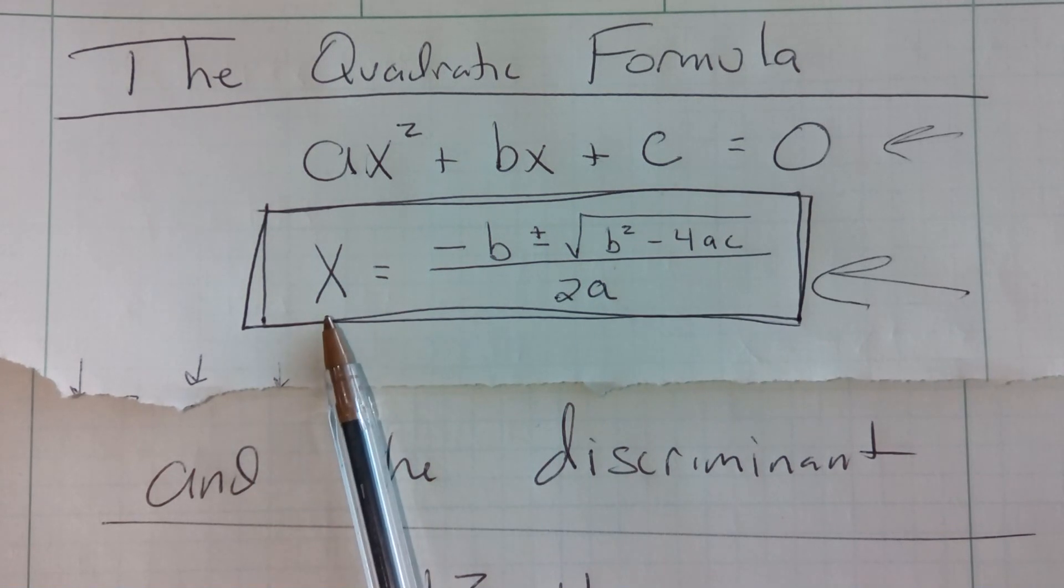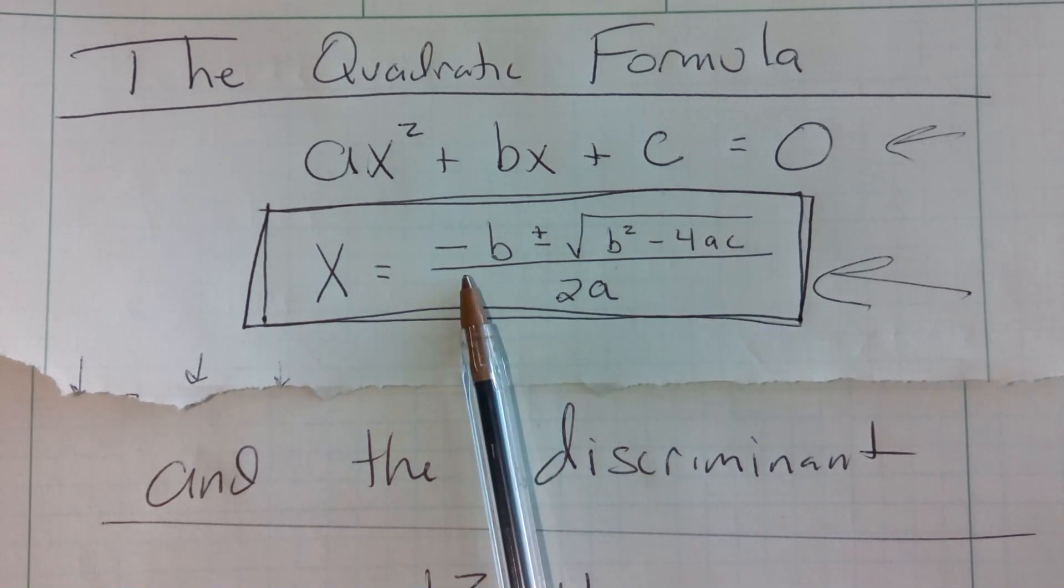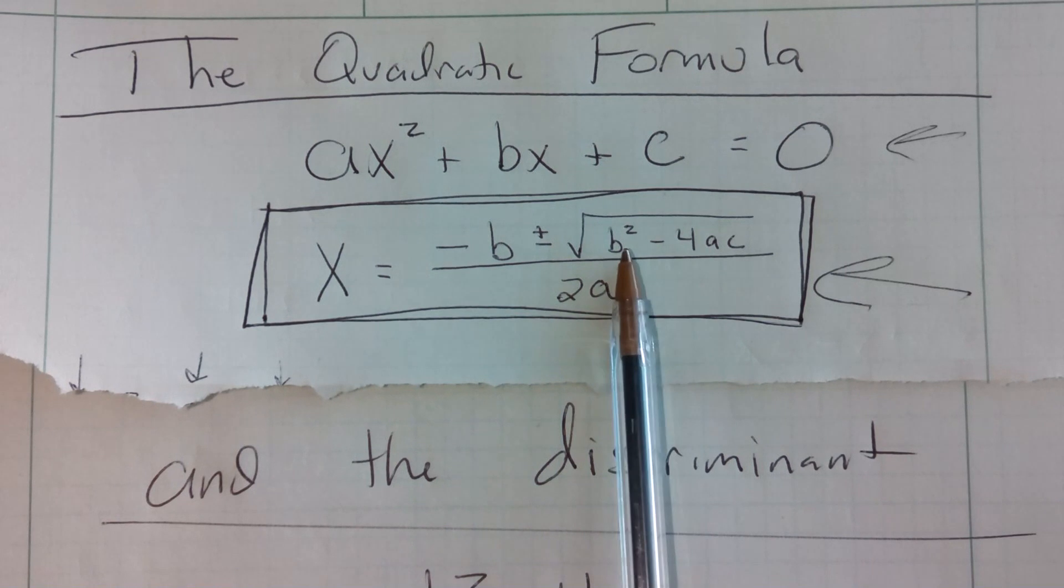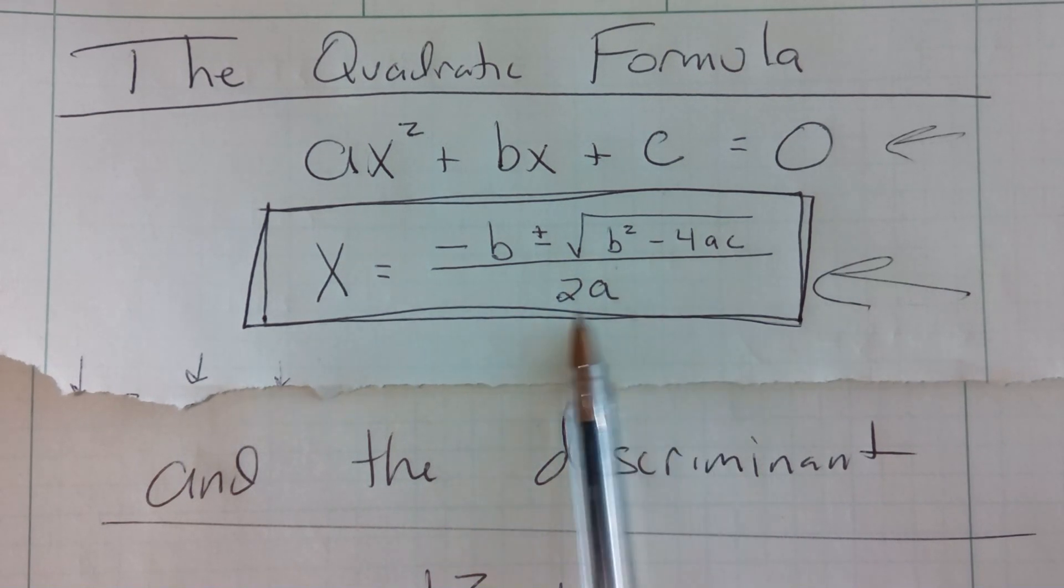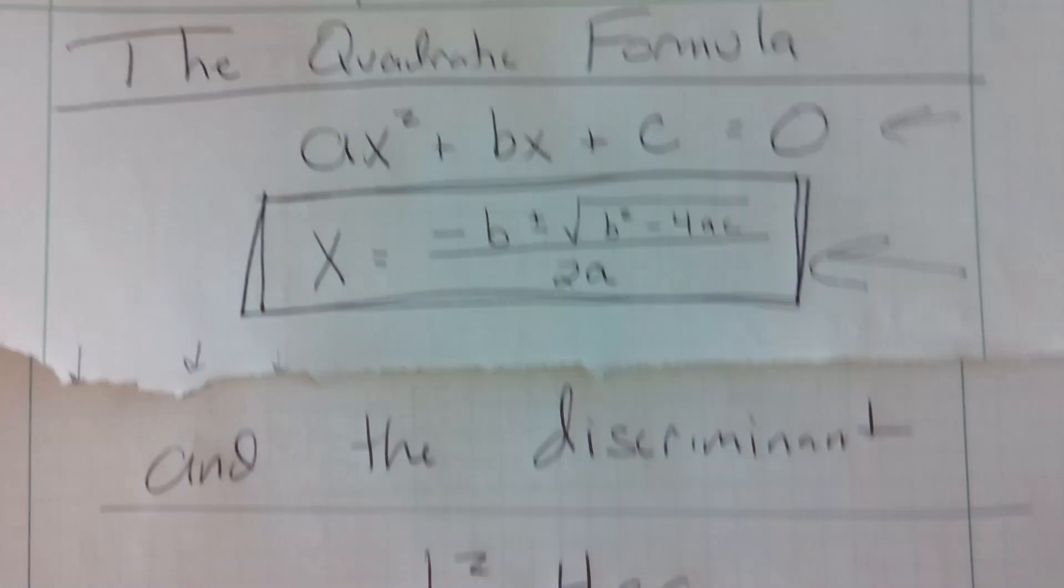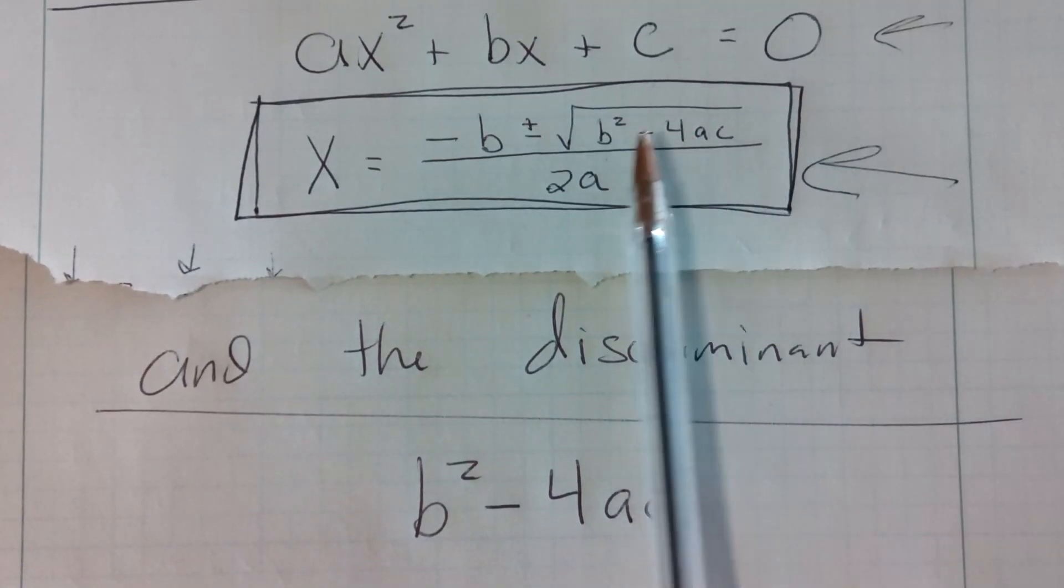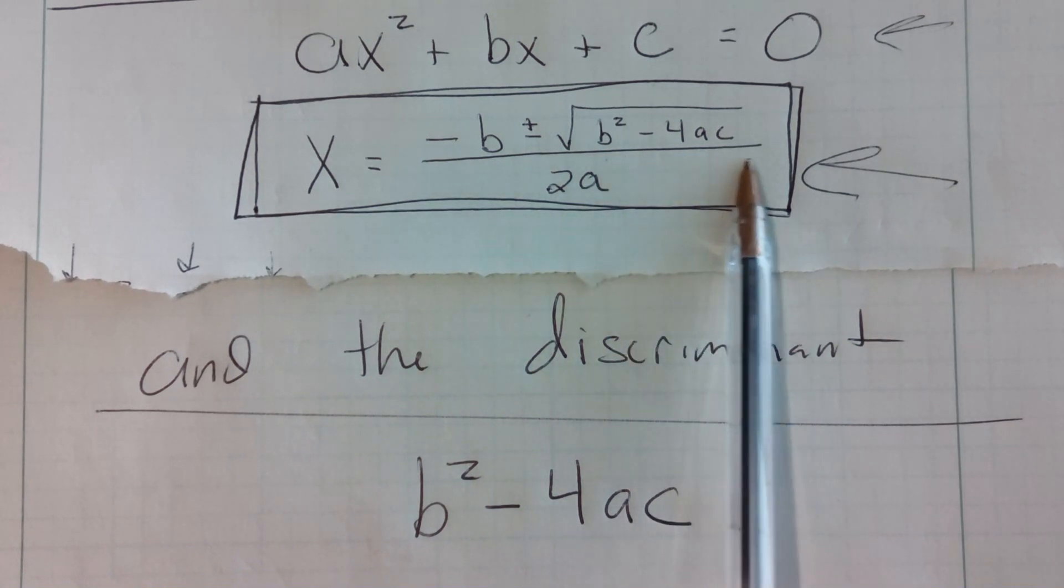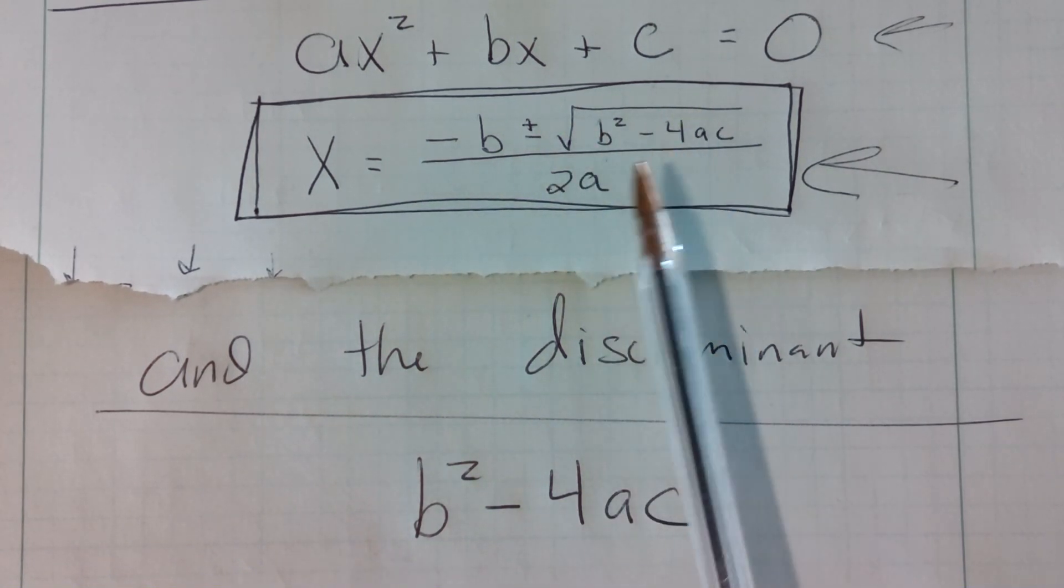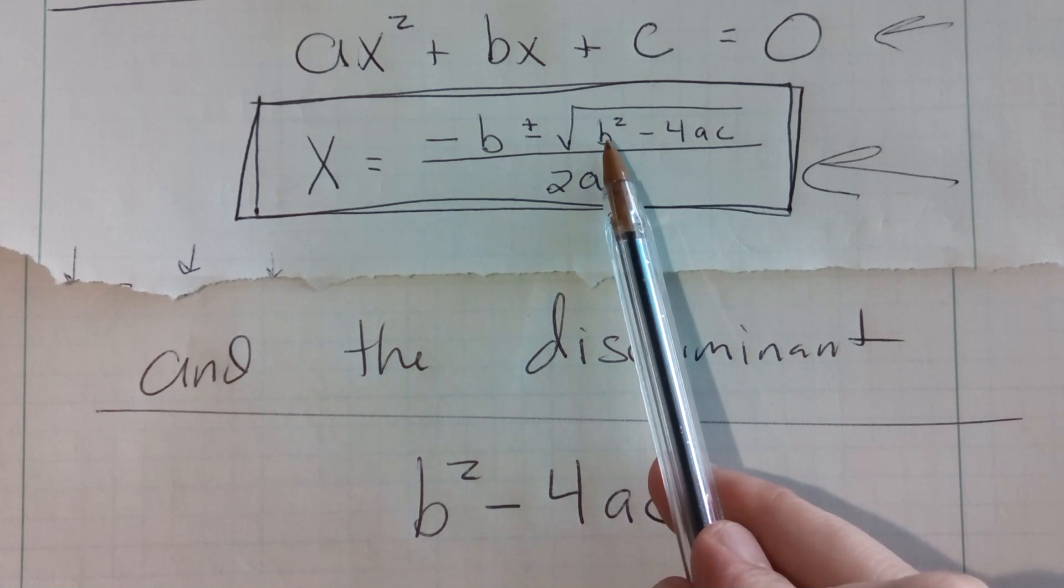The quadratic formula solves for x as long as we're always equal to zero, given this formula of minus b, plus or minus the square root of b-squared minus 4ac all over 2a. The discriminant, or what we consider to be called the discriminant, is that part of the formula that's underneath the square root. We don't consider the square root itself, just b-squared minus 4ac, that part underneath the square root.